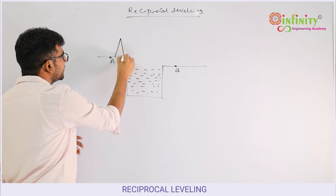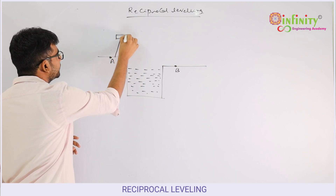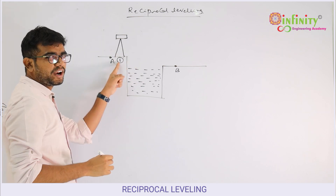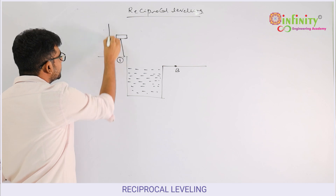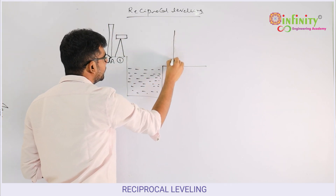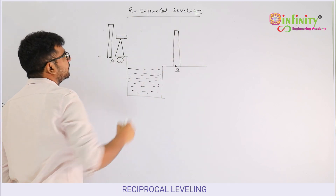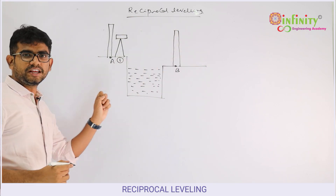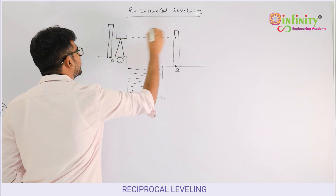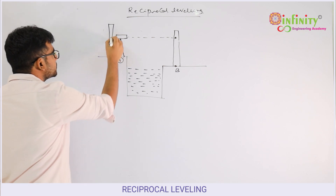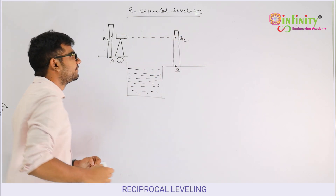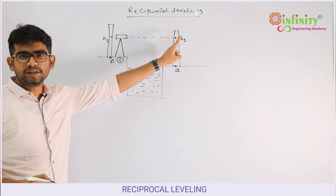To conduct reciprocal leveling, first we set up the instrument nearer to station A. This instrument position is called Position 1. Then we take staff readings on both station A and station B. The reading on station A is called A1 and the reading on station B is called B1.